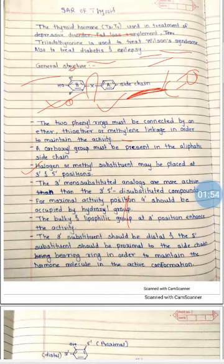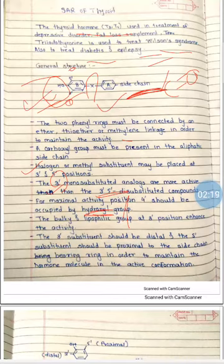3' mono-substituted analogues are more active compared with the 3' and 5' di-substituted compounds. For maximal activity, position 4' should be occupied by a hydroxyl group — that para position must be occupied with an OH group. The bulky and lipophilic group at the 3' position enhances the activity.